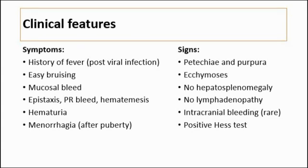Signs that indicate ITP include the absence of hepatosplenomegaly on abdominal examination and no lymphadenopathy. Some patients might present with intracranial bleeding, but it is rare. The HES test would be positive, which indicates ITP or some other platelet disorders.